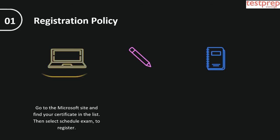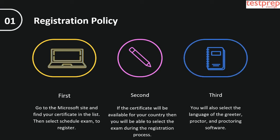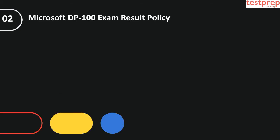Registration policy. First, go to the Microsoft site and find your certificate in the list, then select Schedule Exam to register. Second, if the certificate is available for your country, you will be able to select the exam during the registration process. Third, you will also select the language of the greeter, proctor, and proctoring software.